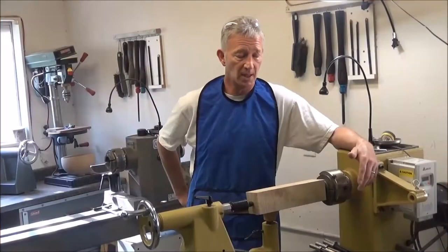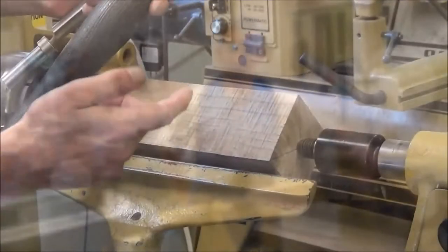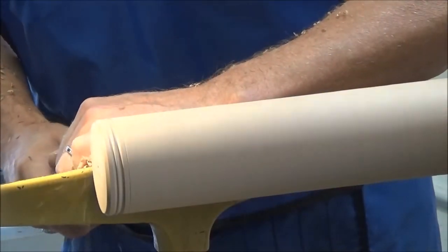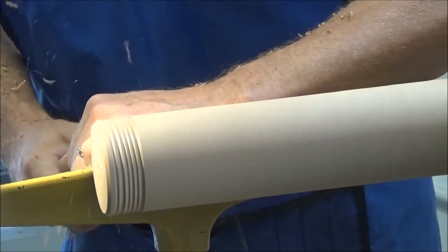I'm going to turn a long stem goblet and show you how to do it when it's a board. What I'm going to try and do is turn a tapered stem. I'm going to do a series of little V cuts.